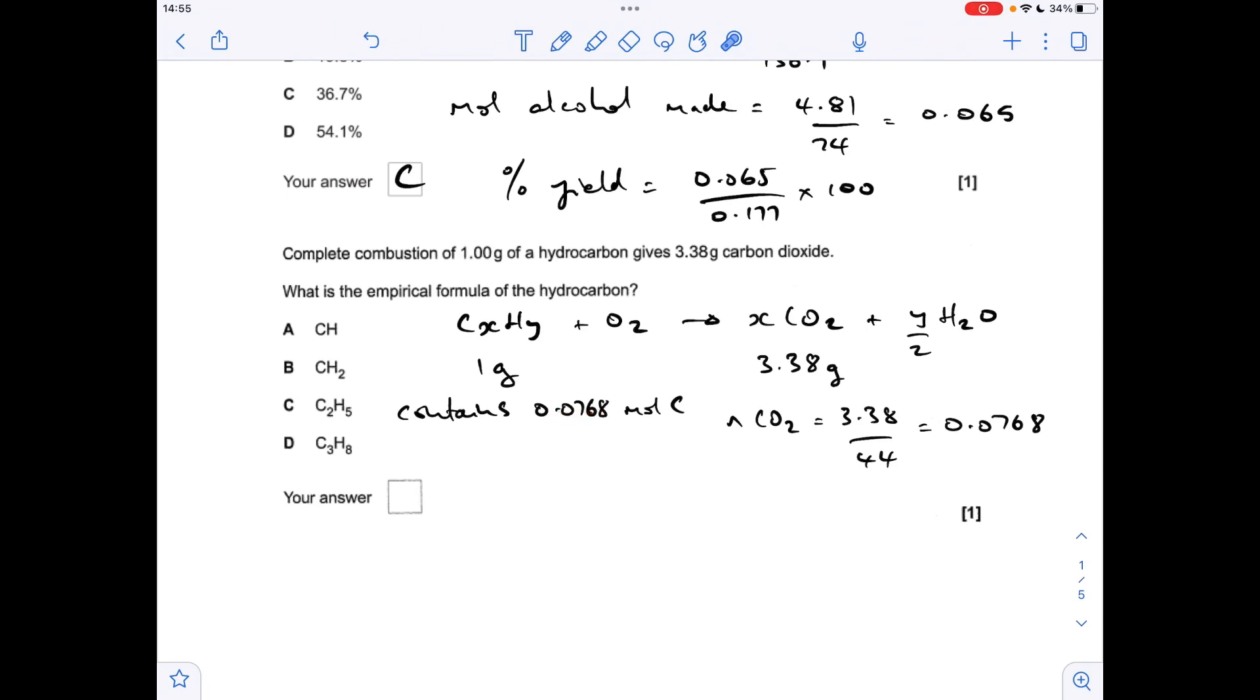The next thing we'll do is turn these moles into grams. We'll find the mass of carbon in CₓHᵧ, so that comes out at 0.922 grams. We know the whole thing weighs a gram, so the difference between these two numbers is the mass of hydrogen.